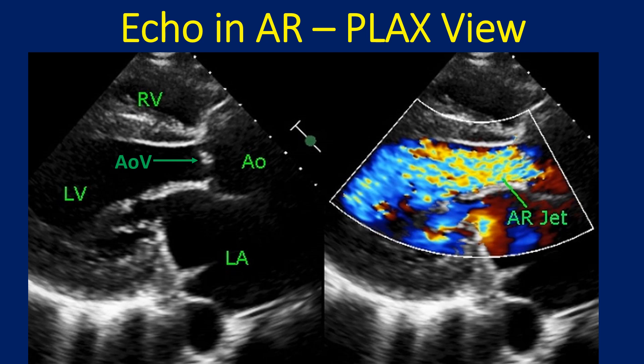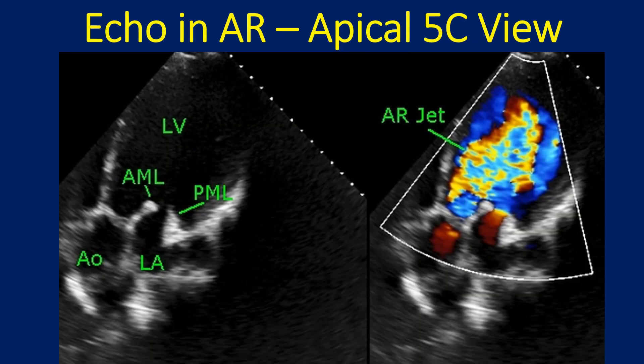The dilated left ventricle, aorta, and left atrium also suggest that the AR is severe. The apical 5-chamber view shows the dilated left ventricle, thickened anterior mitral leaflet, and posterior mitral leaflet. In this view also, the AR jet is large, extending deep into the LV, indicating severe AR. Thickening of both aortic and mitral leaflets indicates the possible etiology as rheumatic.